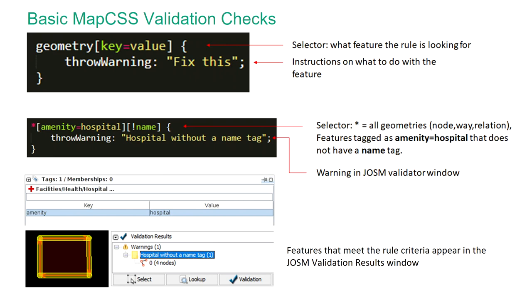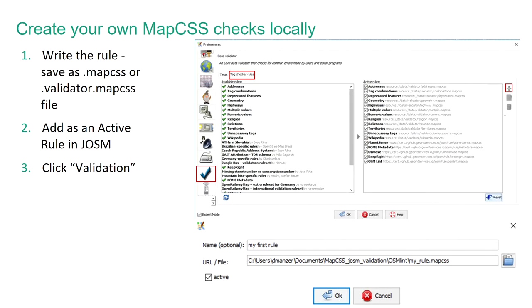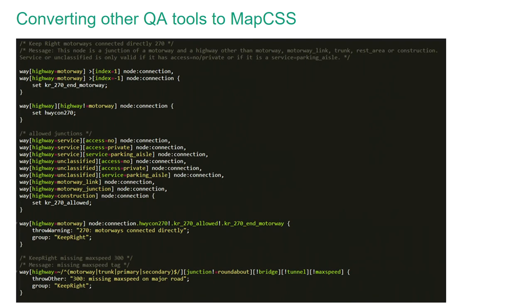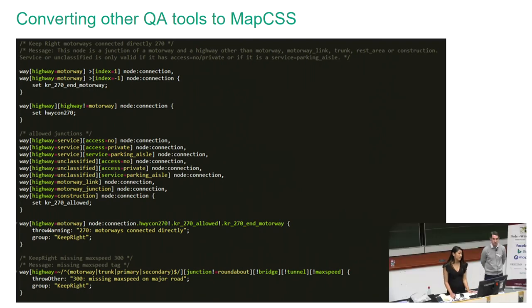When validation is run, if you have any features that match your rule criteria, the warning will show in the validation results window. You could create your own MapCSS checks and save them as a .mapcss file, or more specifically a .validator.mapcss file. Then go to your JOSM preferences and add them as an active rule, and they would immediately become incorporated into your local JOSM validation checks. We've taken a look at the common issues detected by the QA tools and started creating MapCSS checks based on them so that we can find those issues in JOSM.